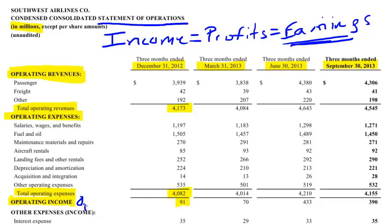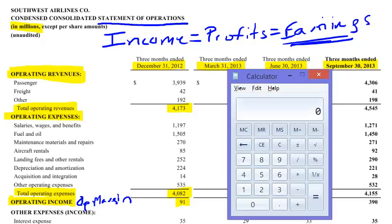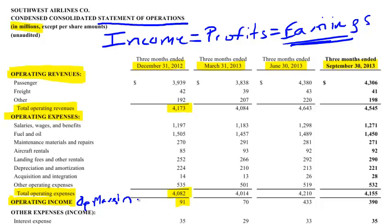So what we do is we look at that $91 million as a percentage of revenue, and that will be the margin — we're going to call it the op margin. So let's calculate that. We simply take the ratio of the income to revenue. We take 91 million dollars divided by 4,173 — 4.173 billion — and we get a percentage of about 2.2%. So our operating margin in this period is 2.2%.